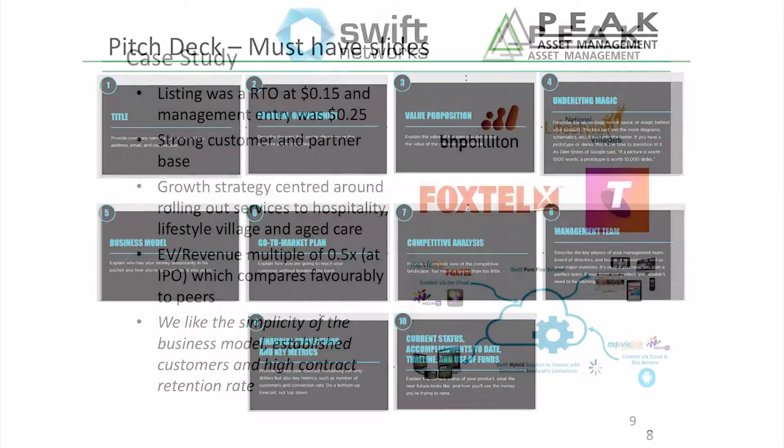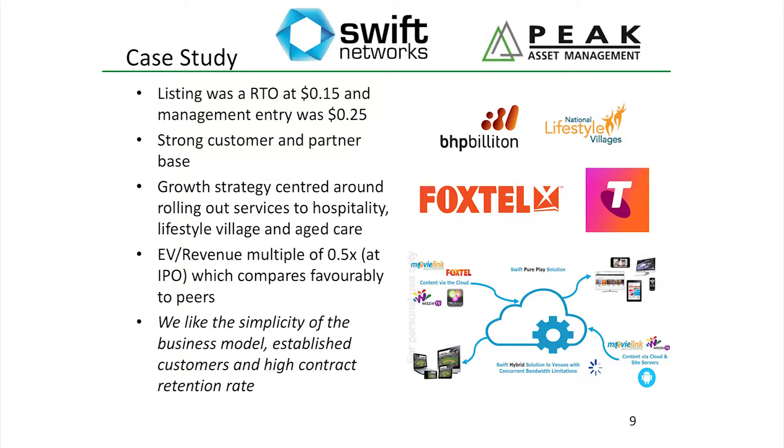I just want to take a case study. Swift Networks is a company that we actually listed on the stock market — the code is SW1. We met Swift about a year ago where they were not an early stage business, but they had structural issues. Their cost base was way too high — they were paying $400,000 a year on rent for an office with 20 people. The wages were too high, but they were still a good business with 97% recurring revenues.